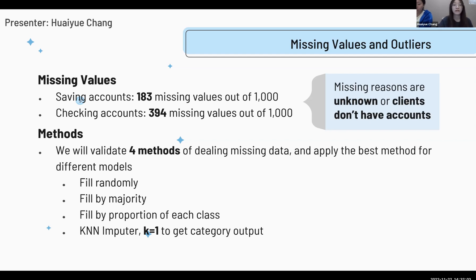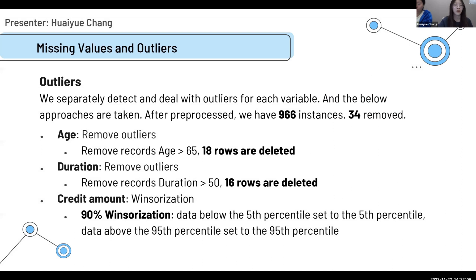For outliers, we have three numerical variables: age, duration, and credit amount. For age, we will remove the outliers. For credit amount, we will use 90% winsorization with regression, replacing outliers below the 5th percentile and above the 95th percentile.